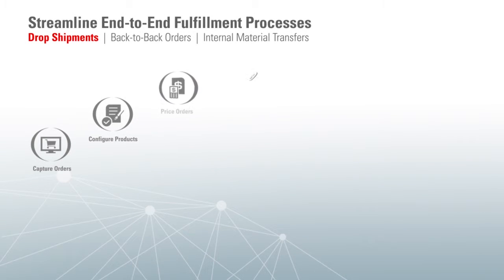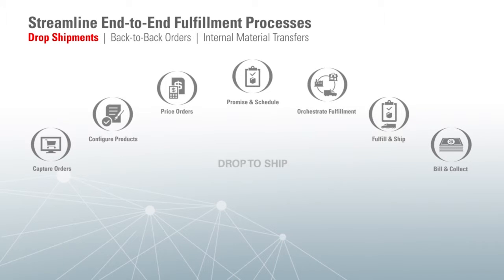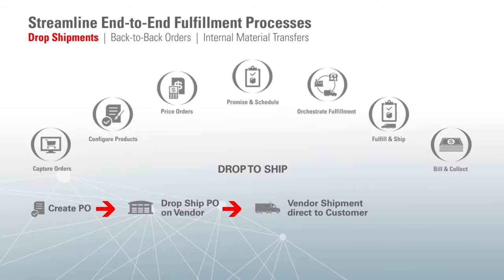Once the order has been entered, the cloud planning and GOP products dynamically determine the best source of supply to meet demand. The pre-built flows will automatically execute based on the best way to fulfill the customer order. The new dropship flow enables you to effectively manage both the physical and financial aspects of your supplier-to-customer dropshipments. The purchase order is automatically created and sent to the supplier. Once the supplier has shipped the goods to the customer, the ASN automatically triggers the invoice and accounting process.